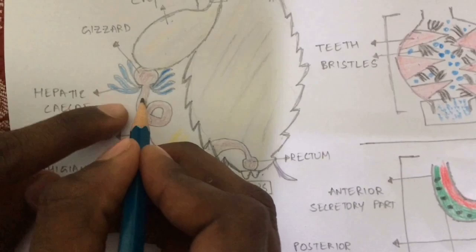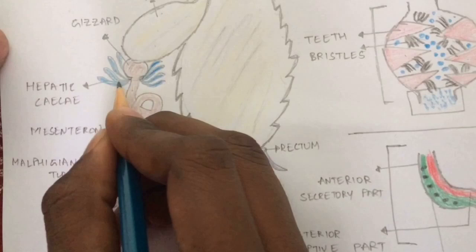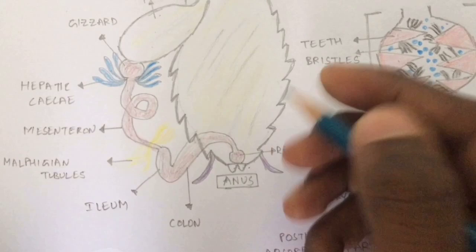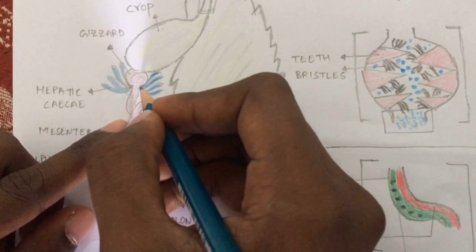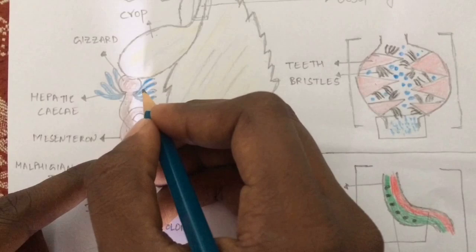The part where the midgut starts is known as the ventriculus. The midgut is commonly known as ventriculus. The food which enters into the midgut from the gizzard reaches the ventriculus, where eight finger-like projections will be present — these are nothing but hepatic caeca.